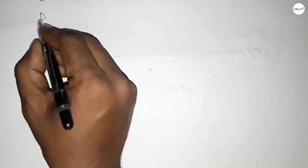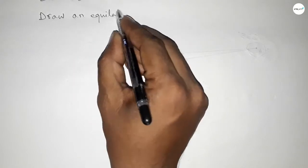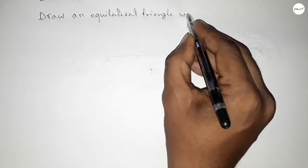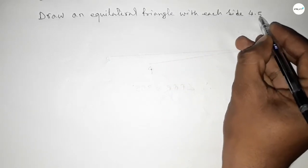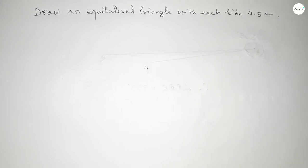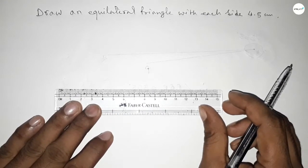Hi everyone, welcome to SHR classes. Today in this video we have to draw an equilateral triangle with each side 4.5 centimeters. So constructing an equilateral triangle with side 4.5 centimeters. Let's start the video. First of all, we have to draw a line 4.5.